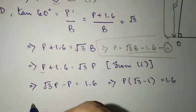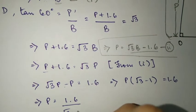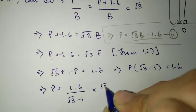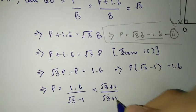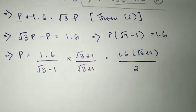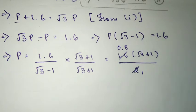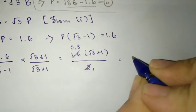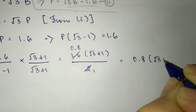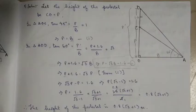Root 3 minus 1, we're going to rationalize it. When you rationalize, you multiply by root 3 plus 1. This is A plus B into A minus B. After solving, the final answer is 0.8 root 3 plus 1. B is equal to 0.8 into root 3 plus 1, and this is the final answer for question number 5, okay.